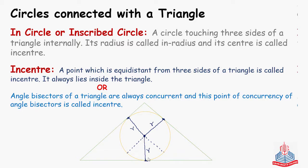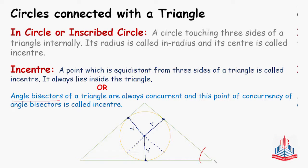First of all, what is an angle bisector? An angle bisector is a line which divides an angle into two equal parts. Suppose this is an angle — the line that cuts this angle into half, this line will be an angle bisector. So, the point of concurrency of angle bisectors is called in-center.